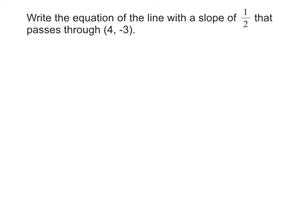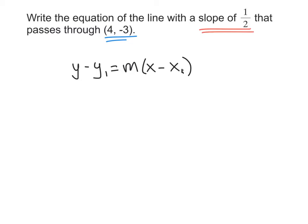Let's try the second example. It says write the equation of the line with a slope of 1 half that passes through the point (4, negative 3). In this example we are given the slope, but this time we're also given a point. If we're given a point and we know the slope, we probably want to write our equation in point-slope form. So I'm going to start by writing our general form: y minus y1 equals m times x minus x1. Now we need to put our slope in for m.